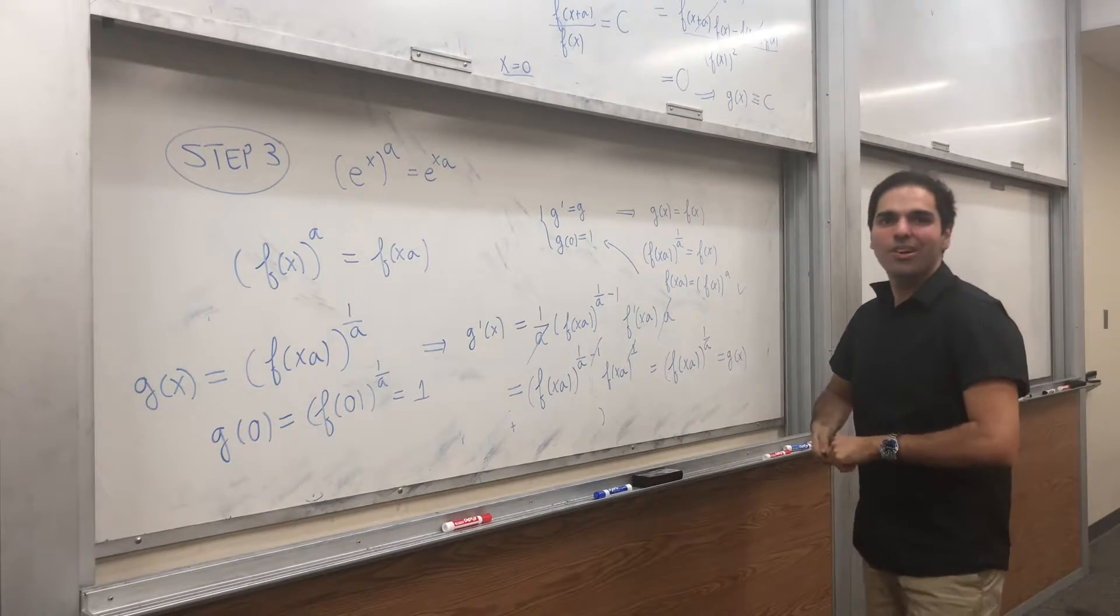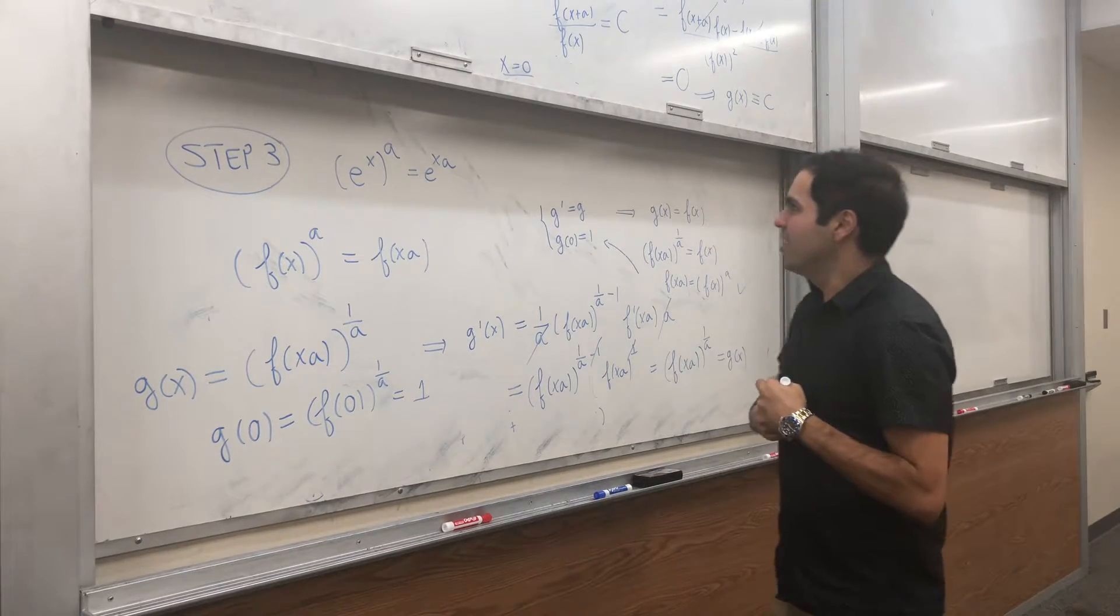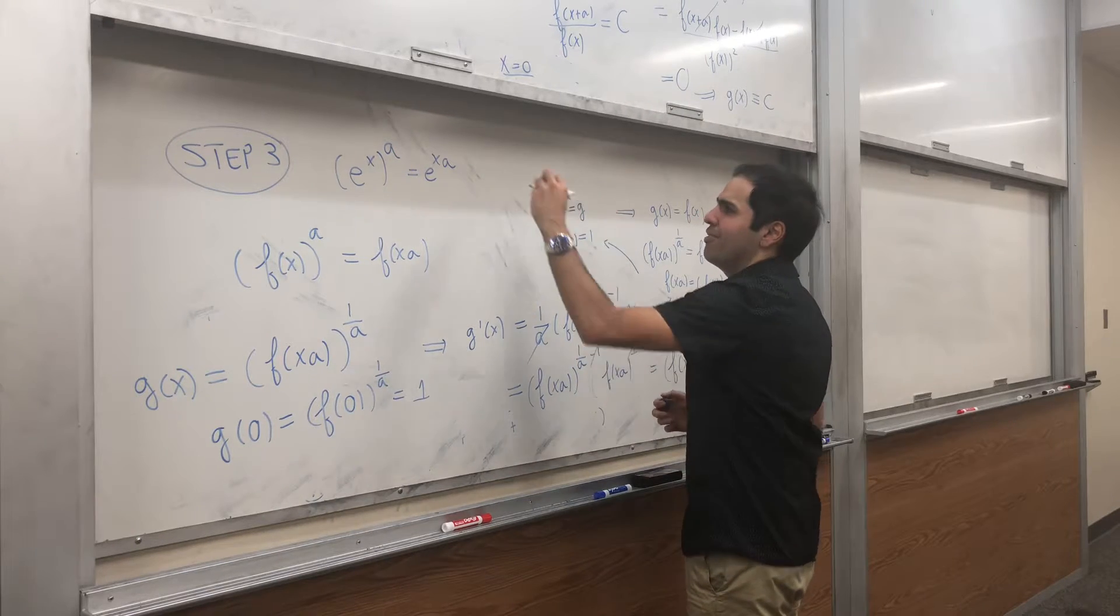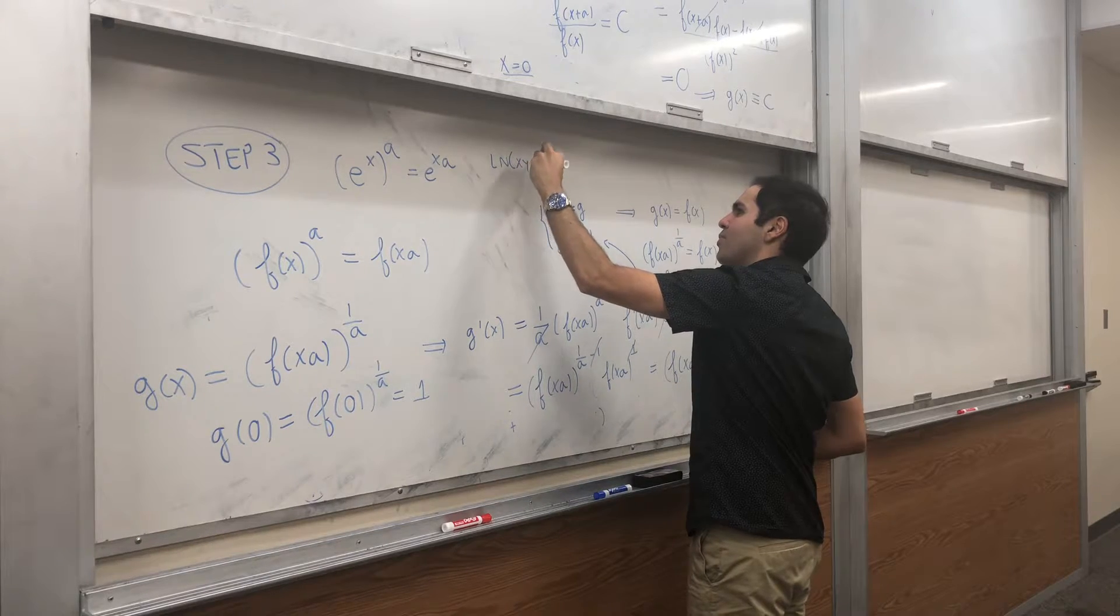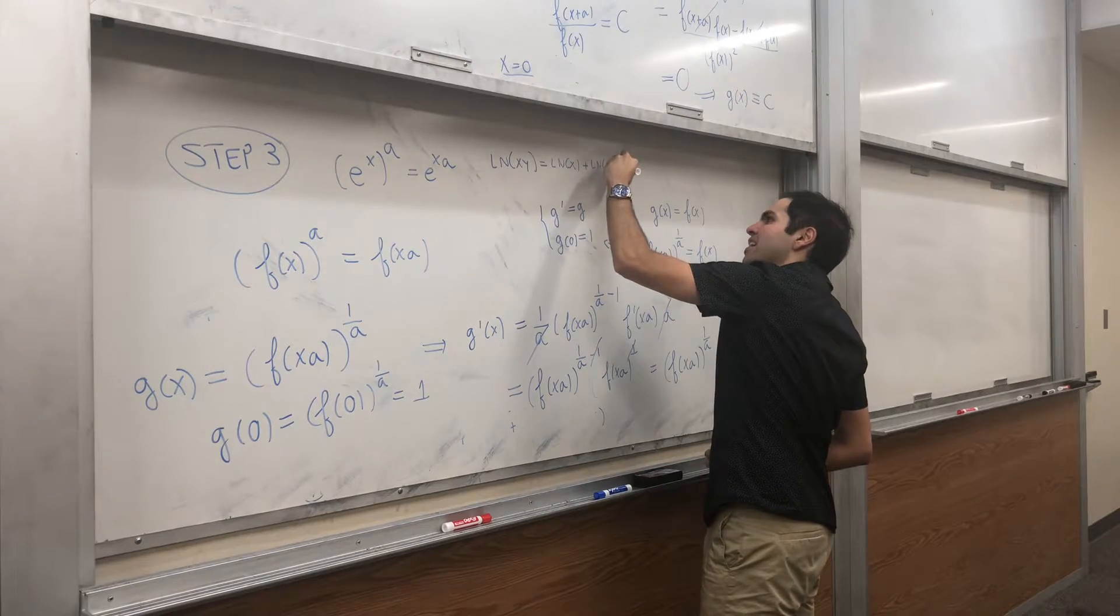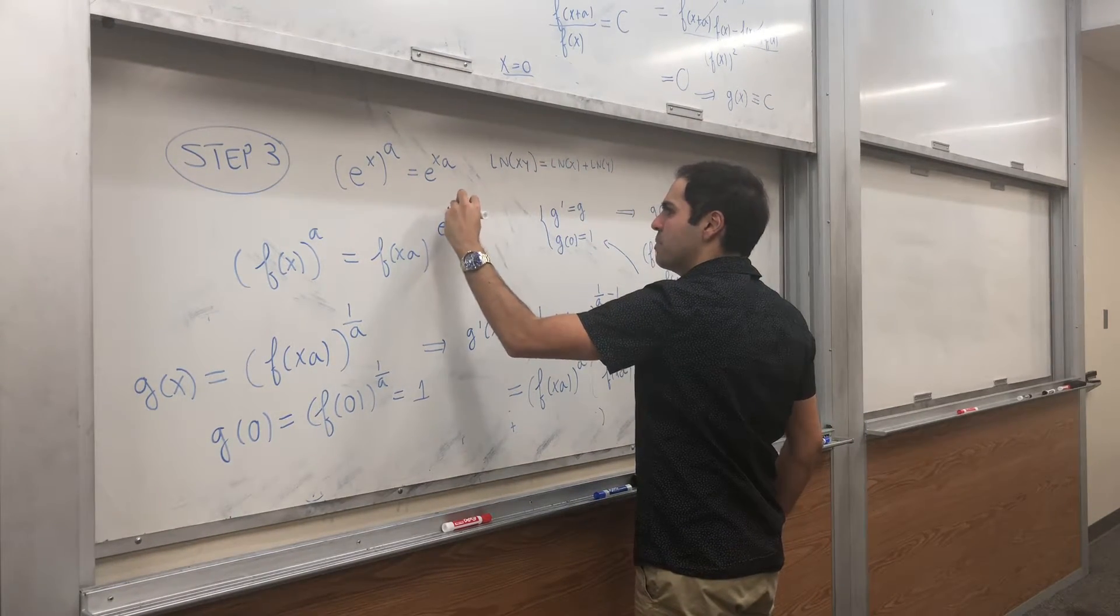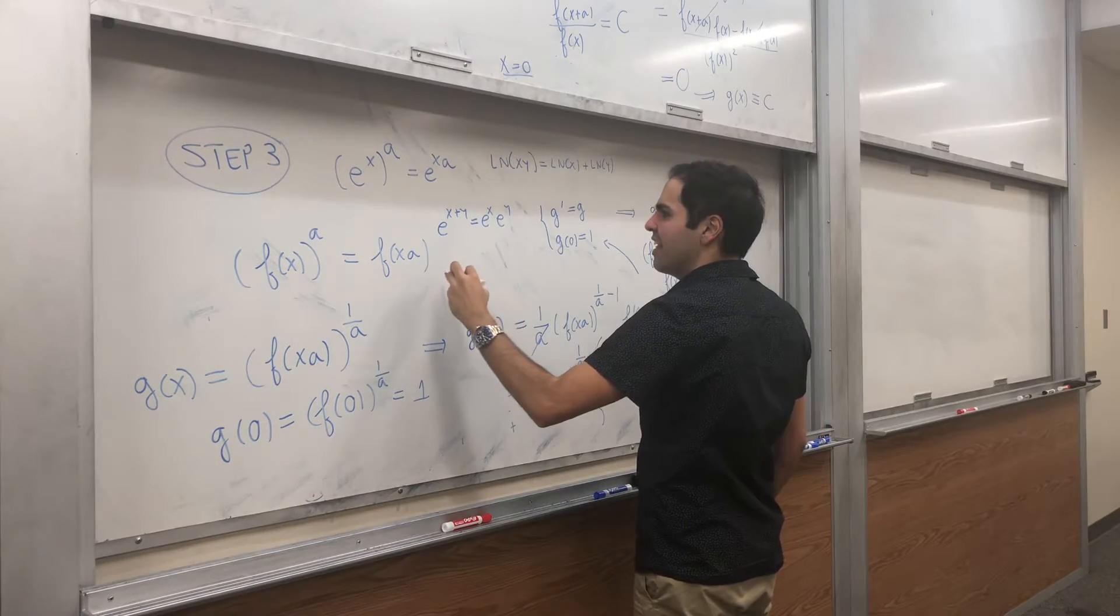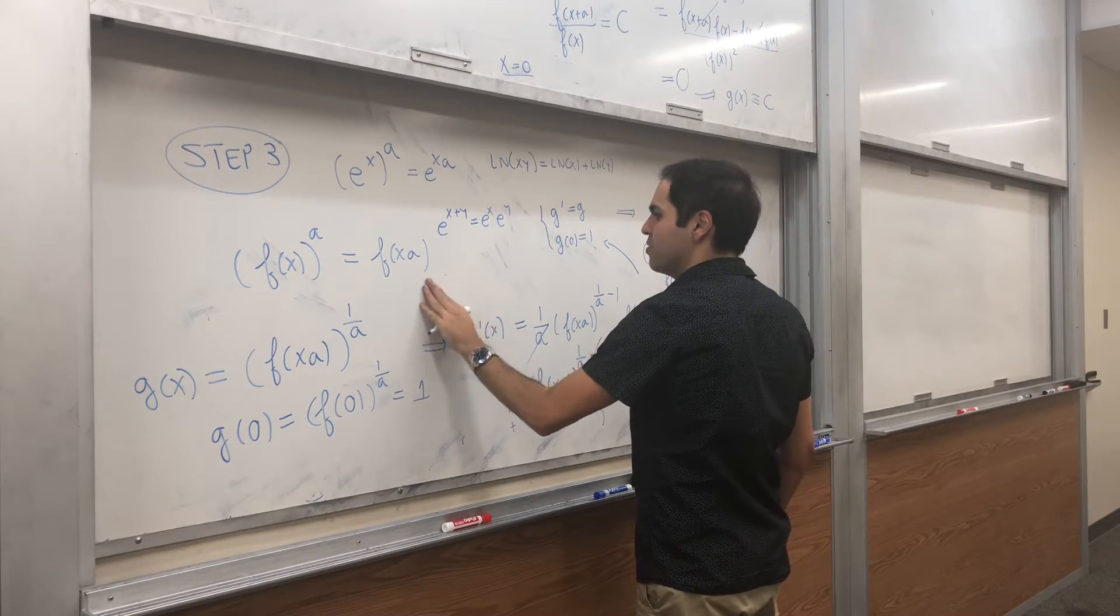And I think from this, we can also get the properties of ln from that. I mean, I was saying, for example, let's show ln of xy equals to ln of x plus ln of y. But that clearly follows because e to the x plus y equals e to the x times e to the y. And then, basically, if you take ln, we get x plus y.